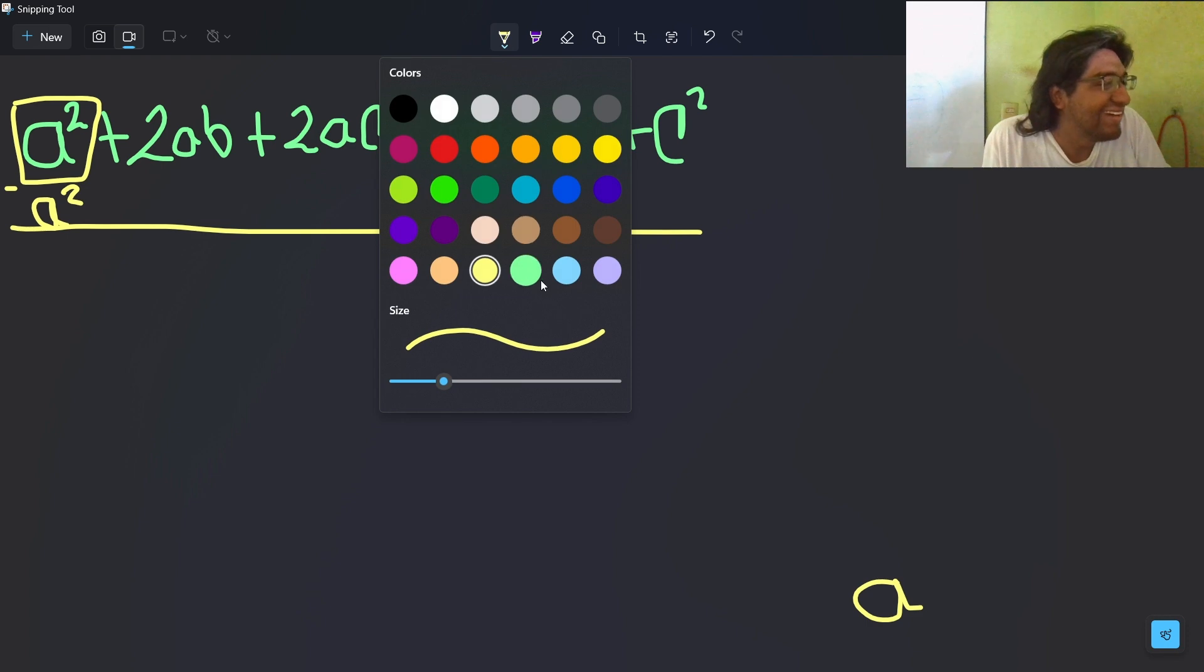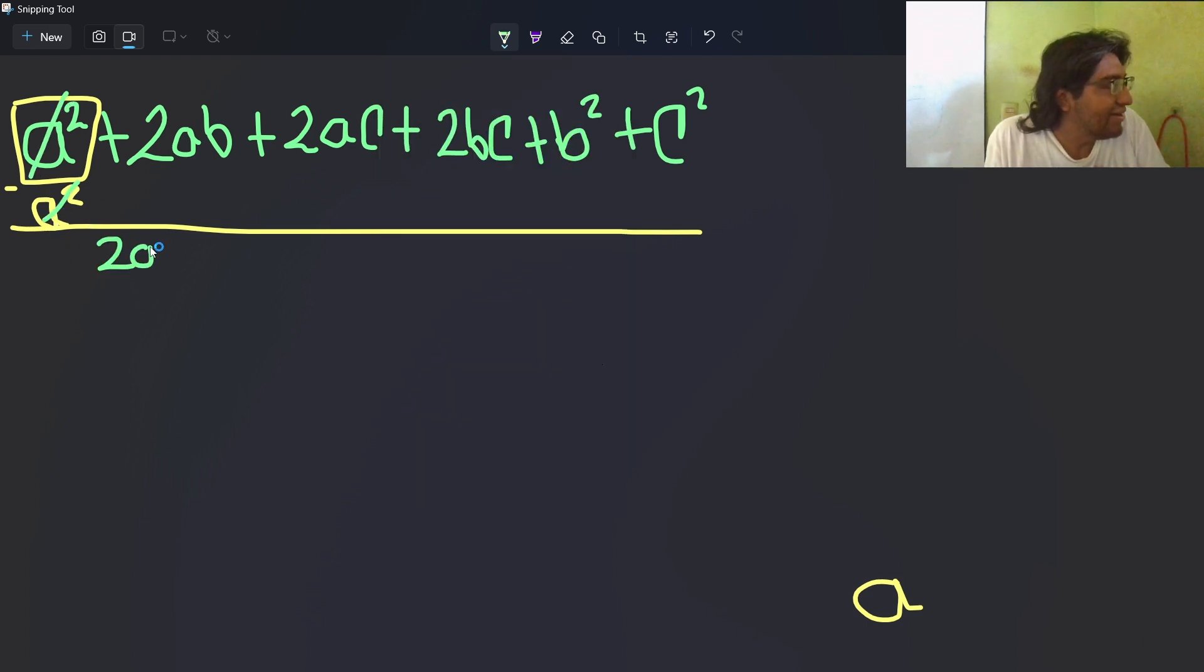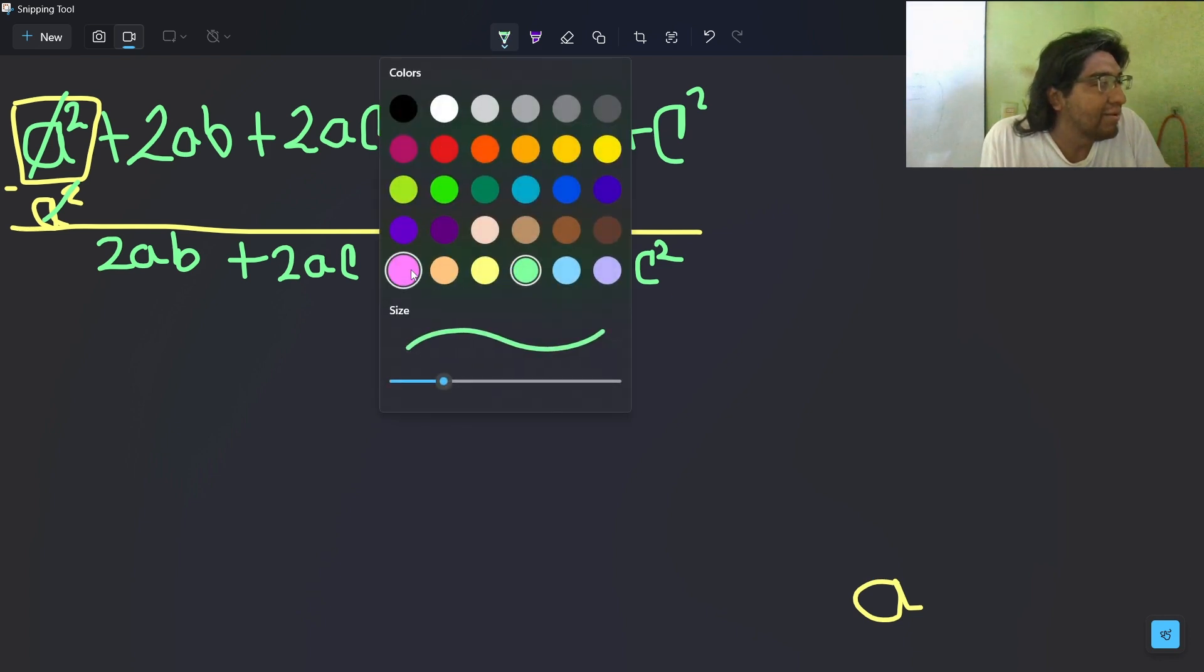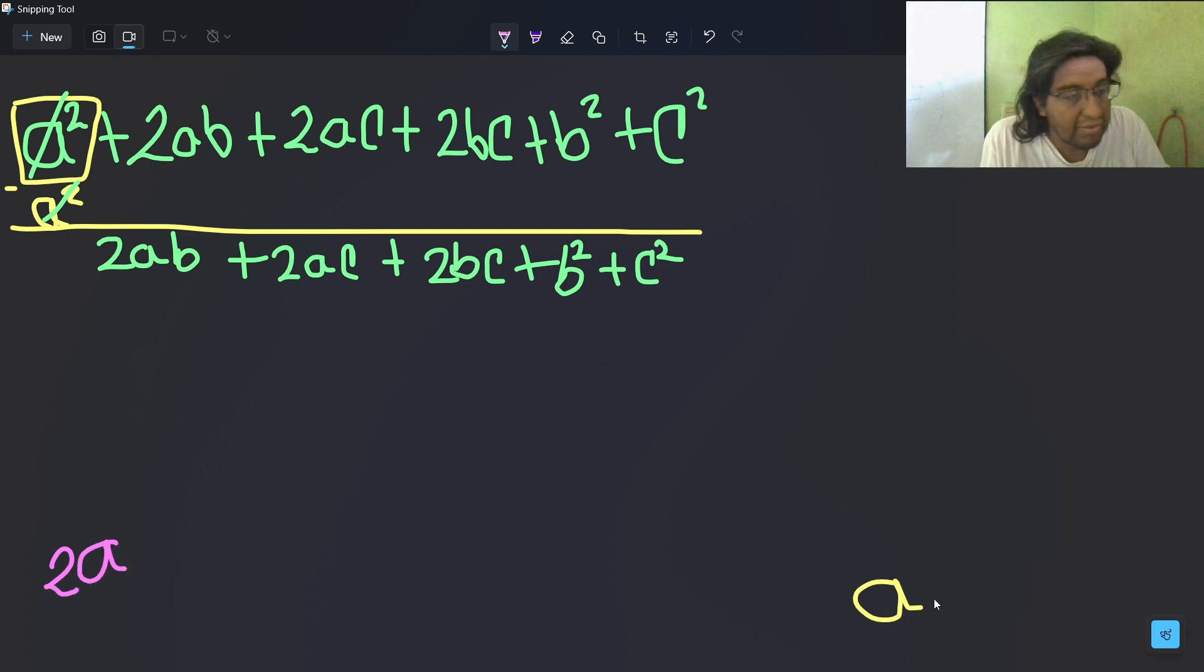The next step is to double this term that you have found here. And divide this first term into this. So 2ab divided by 2a equals b, because 2ab times b is 2ab. And you write it over here, and here. Now you multiply this for all of this.